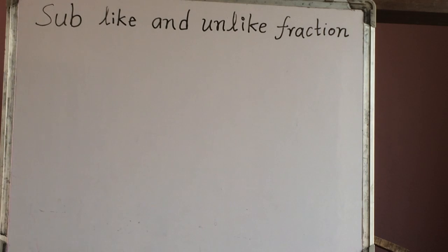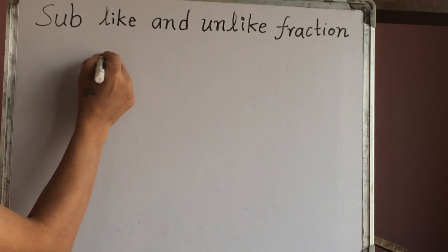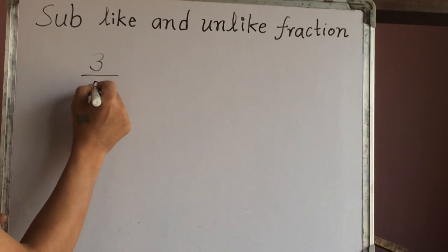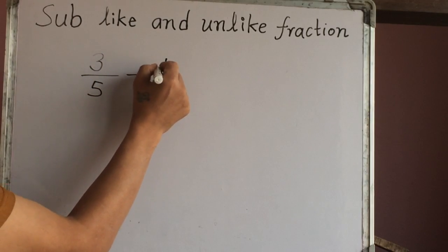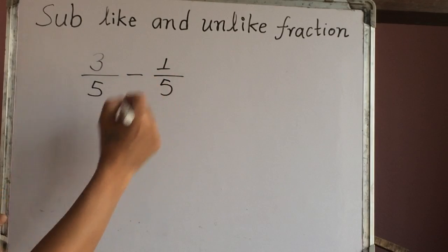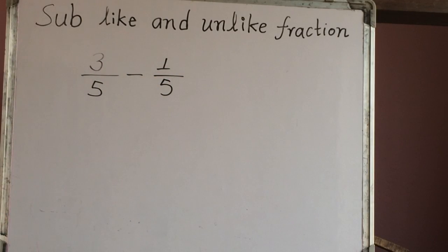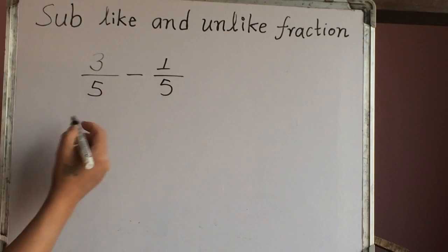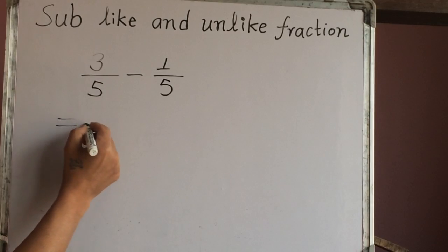Hello everyone, today we will learn how to subtract like and unlike fractions. Let's start with this example: 3 out of 5 minus 1 out of 5. So we have two fractions here, 3 out of 5 and 1 out of 5. This is like fraction because we have the same denominator here.